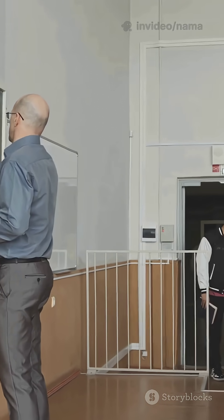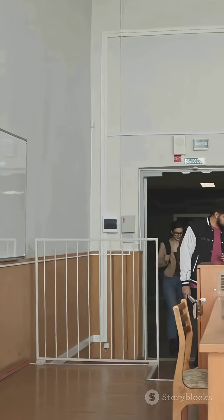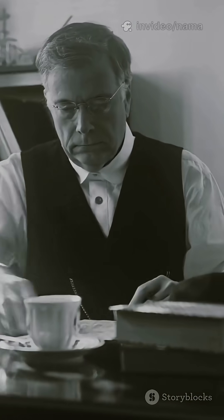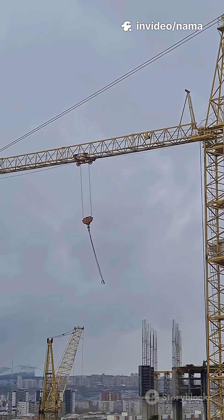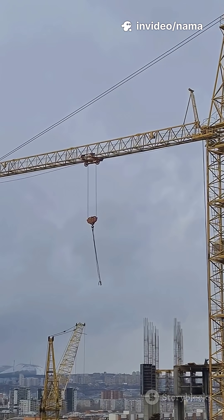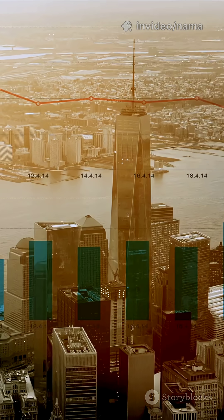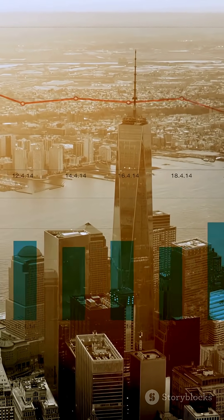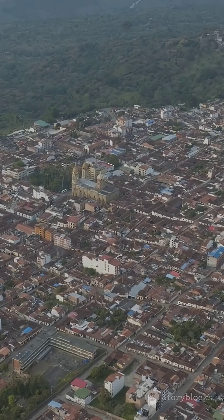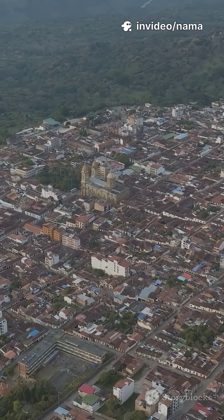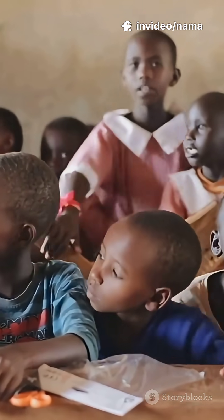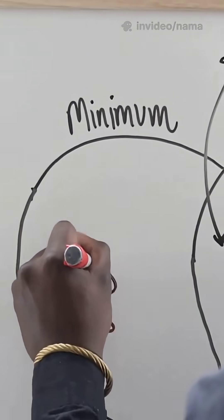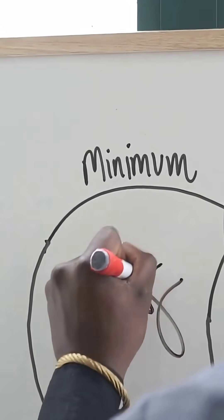Now let's talk about the Kuznets curve — a theory of inequality. Economist Simon Kuznets suggested this idea in the 1950s. As a country starts developing or industrializing, inequality increases. But once the economy matures, inequality starts decreasing. Why? At first, cities grow faster than villages, creating gaps. But later, education, taxes, and government welfare reduce the gap. Think of it like an inverted U-shape: inequality rises, then falls.